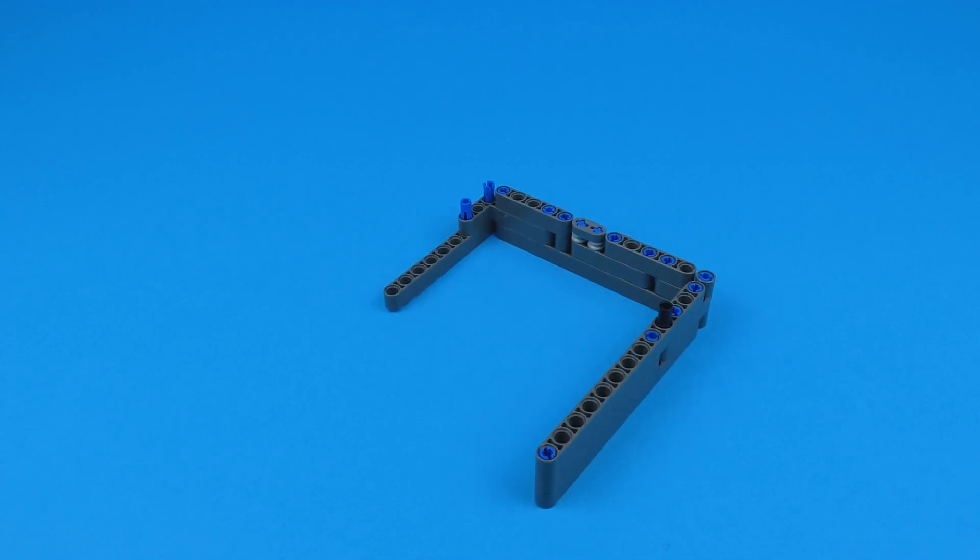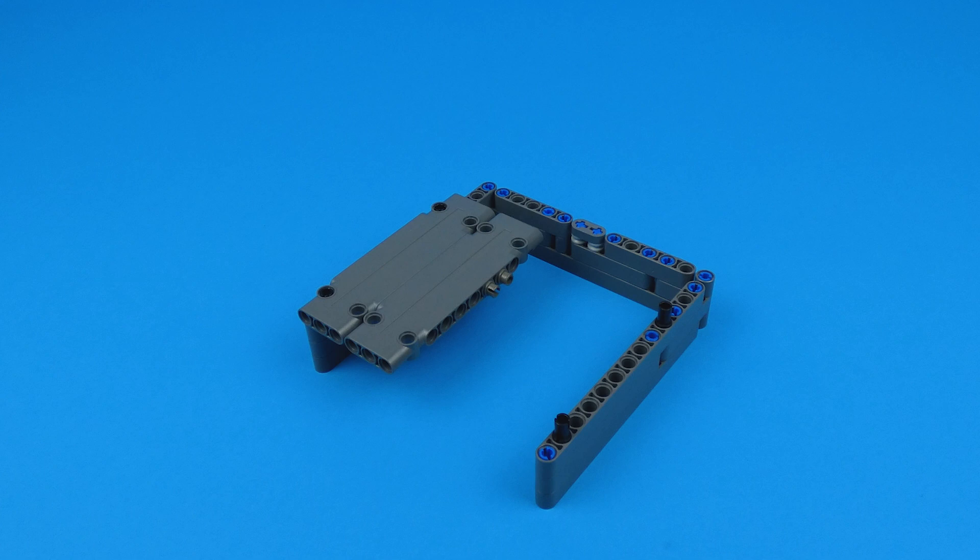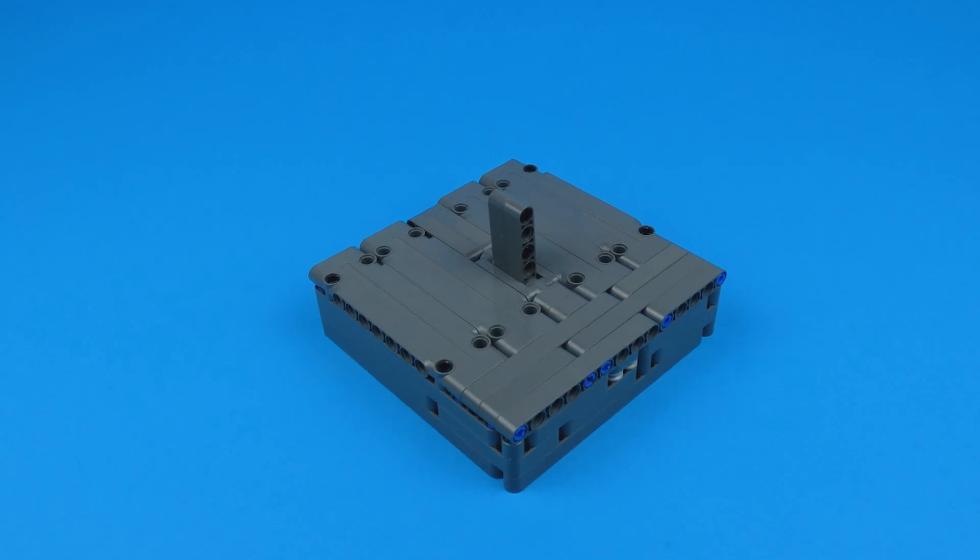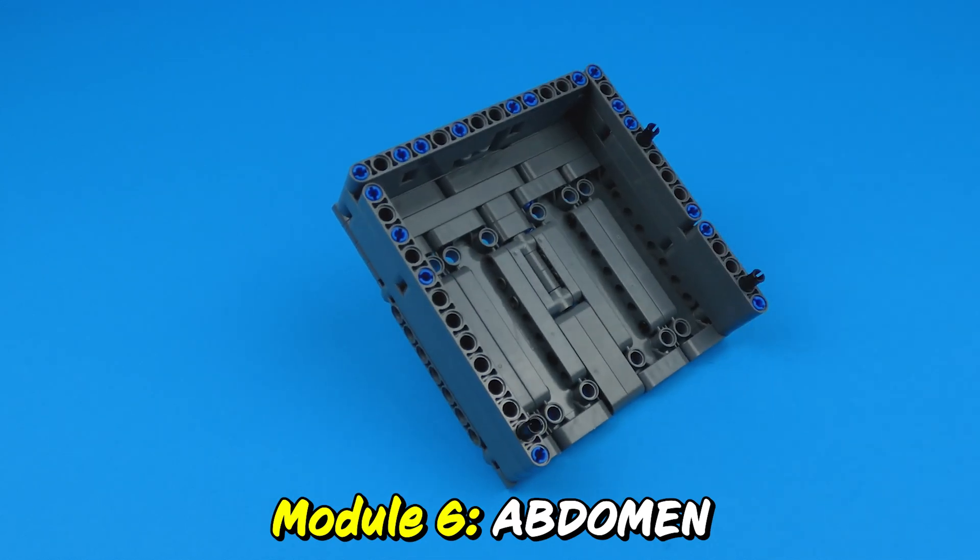The last module was dark grey abdomen. Of course, with a stinger. With this, the body modules were done. All that was needed now was the heart of the bee.